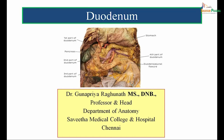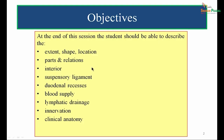In today's session, we will be studying completely about the anatomy of duodenum. The objectives are: after going through this entire session, the student should be able to describe the extent, shape, location, parts and relations, interior, suspensory ligament, duodenal recesses, blood supply, lymphatic drainage, innervation, and clinical anatomy of duodenum.